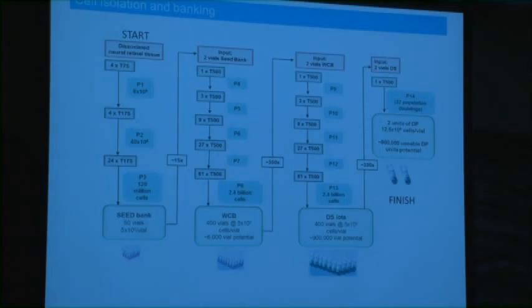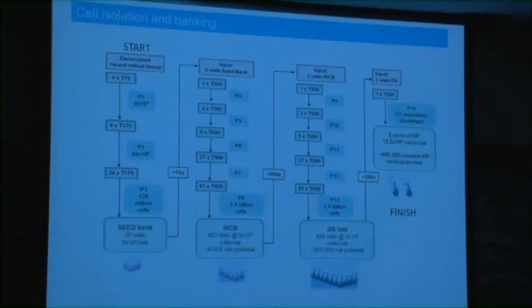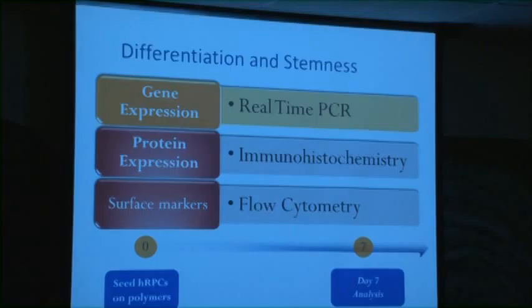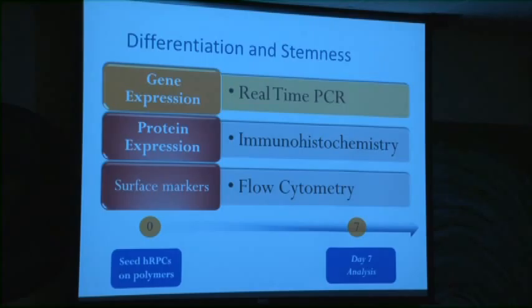Our banking strategy involves three different cell lines banked under GMP conditions with seed banks and working banks, done in collaboration with a Wuxi laboratory outside Philadelphia. They use our technique to isolate the cells under GMP conditions. So we have enough cells — that's not the problem.